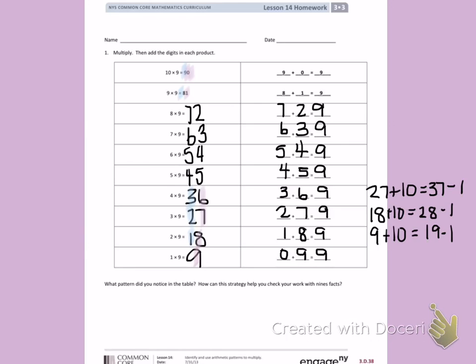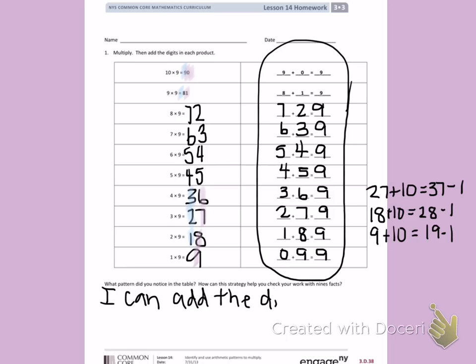What pattern did you notice in the table? How can this strategy help you check your work with 9's facts? On this side of the table, I noticed that every digit, when I added them together, would equal 9. So I can notice to check my answers that I can add the digits in the total to see if they equal 9.